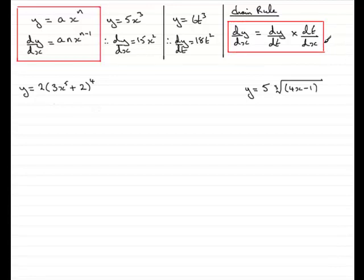Okay so how can we use this to help us differentiate these two examples? Well first of all what we can do is we can say that the 3x to the 5 plus 2 let's think of that as t. So what we've got is that this is equal to 2t to the power 4 where essentially t is the bracket here. 3x to the power 5 plus 2.